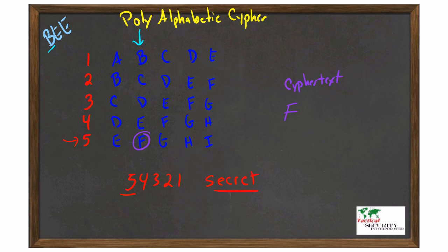We're going to do the same thing again. We start with the second character in plaintext, which is the E. We go down that column, cross-referencing with the second character in our secret, which is a 4, and we should come up with an H.